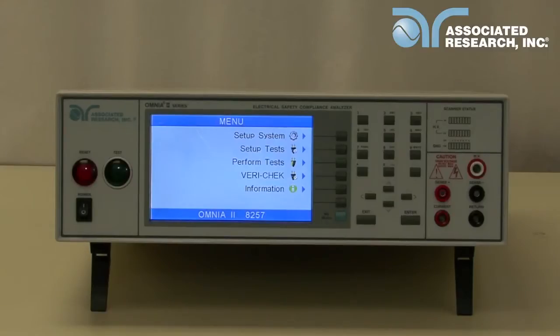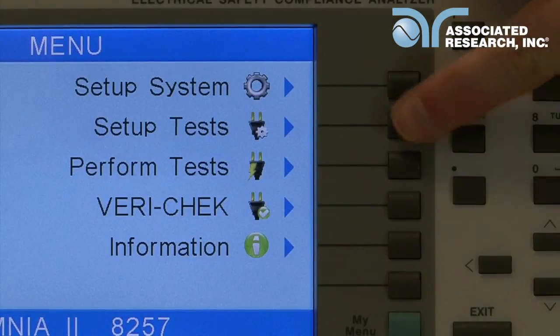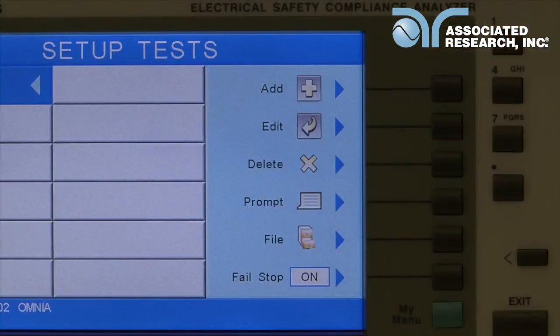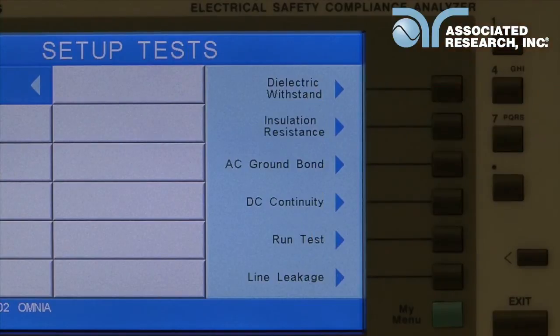First, you'll need to power up your Omnia unit and navigate to the setup test window. From the main menu, press the setup test key, then press the add key to select line leakage.